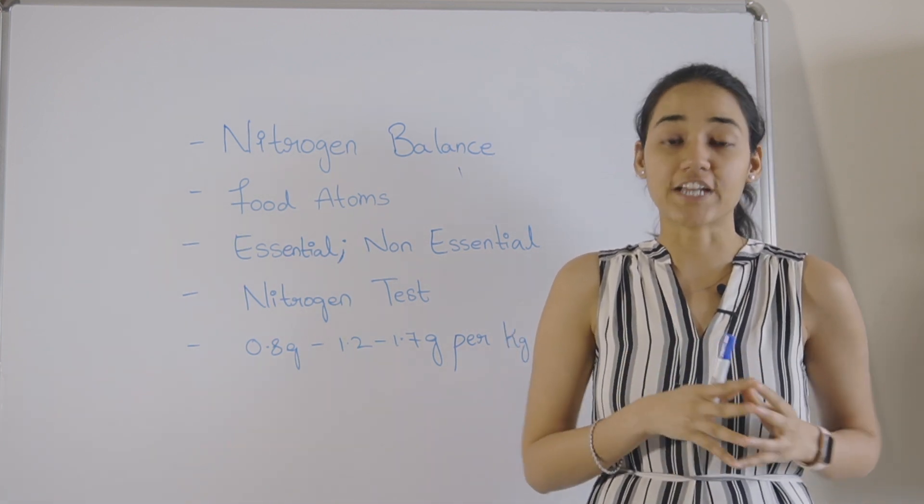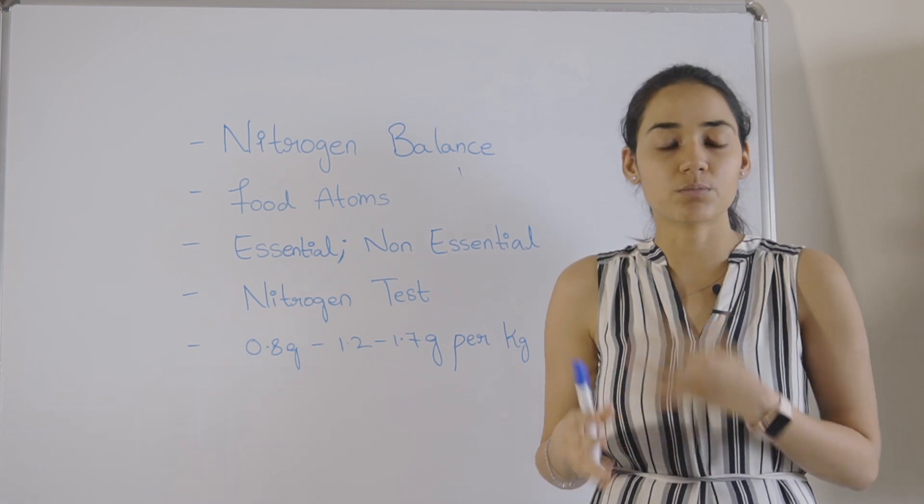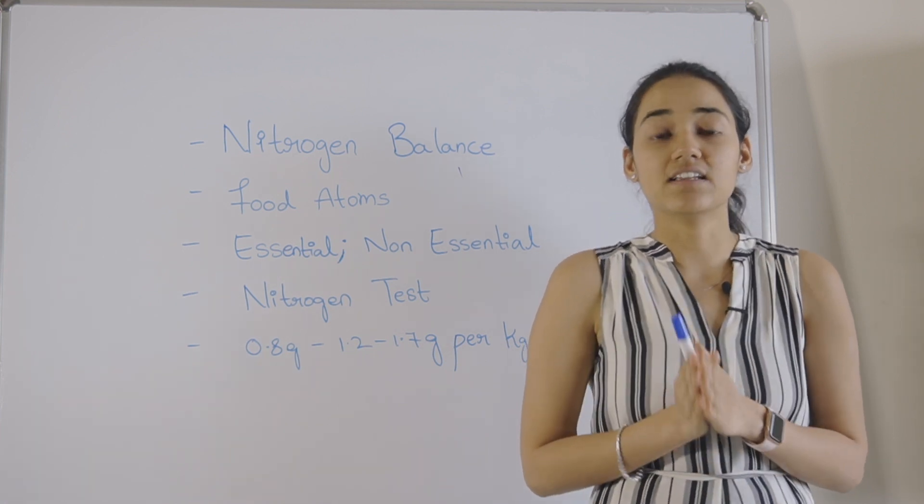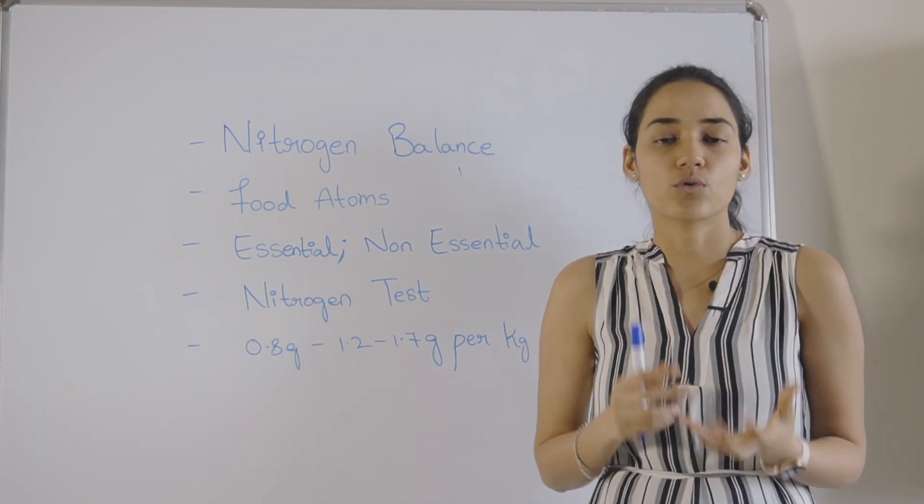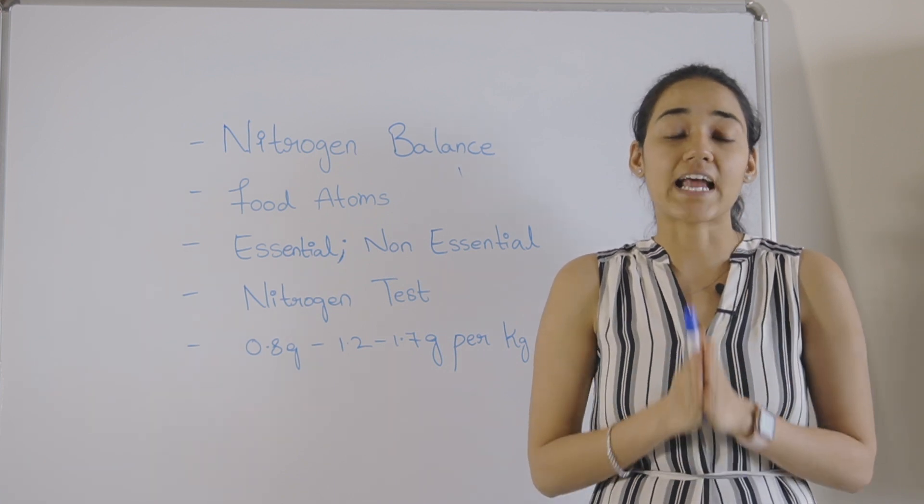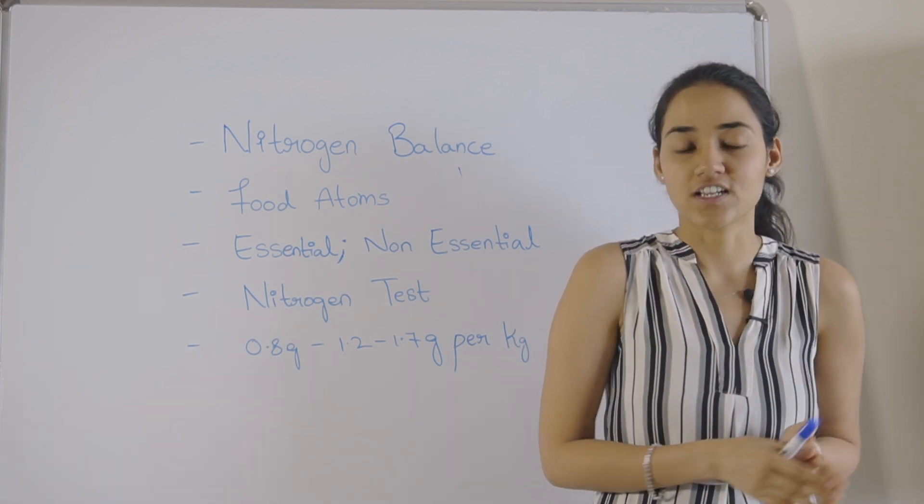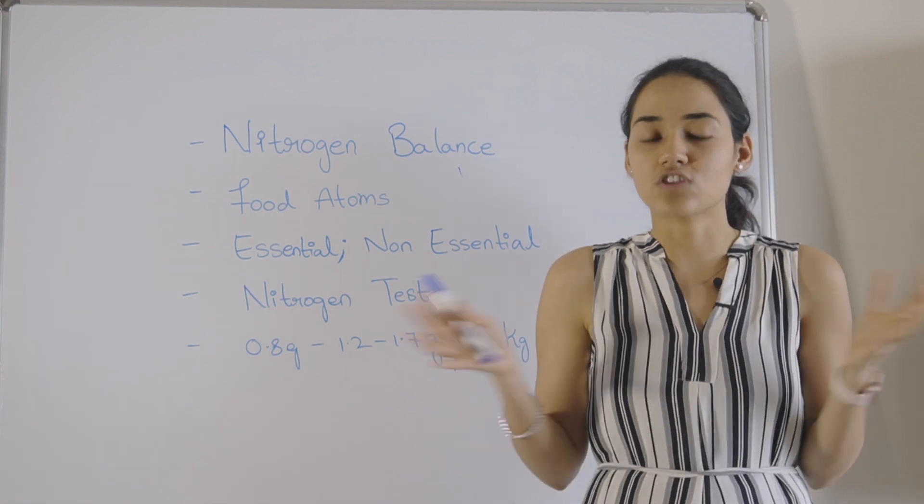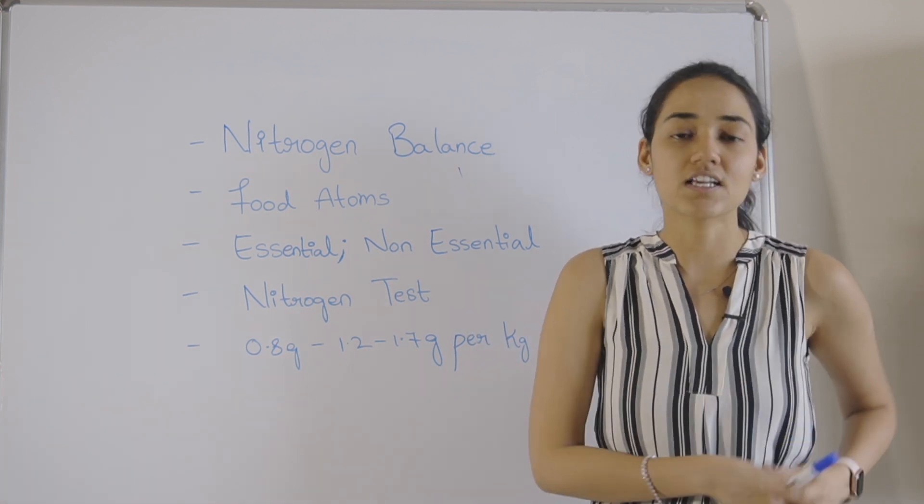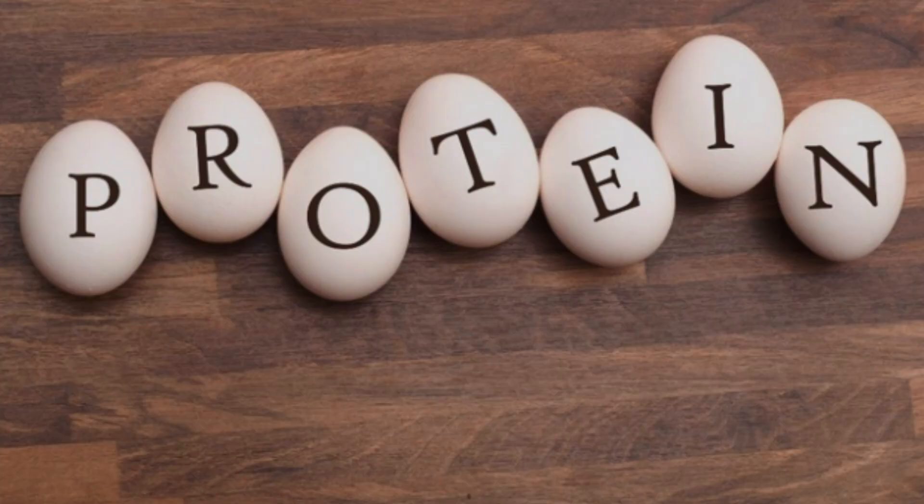Before I talk about what nitrogen is and how it really works in the body, I want you to understand the basic food groups like protein, carbohydrates and fats are actually made of carbon, hydrogen and oxygen. Now there's nothing to worry as there's not a lot of chemistry involved in this. All I want you to understand is that protein is the only form of food that has additional nitrogen in it.